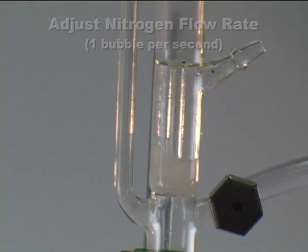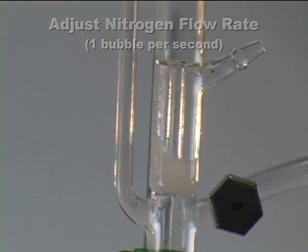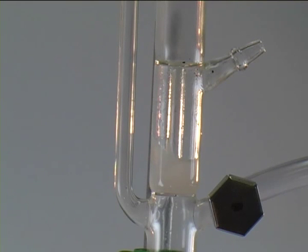Once we have connected everything, we adjust the nitrogen flow rate to one bubble per second, which helps us flush the whole apparatus with our inert gas atmosphere, which is nitrogen.